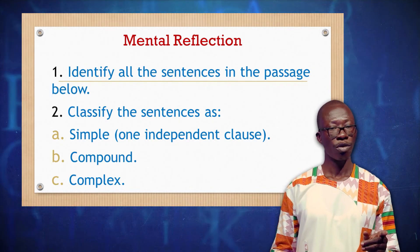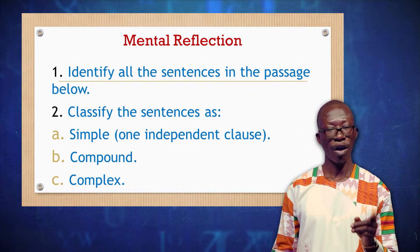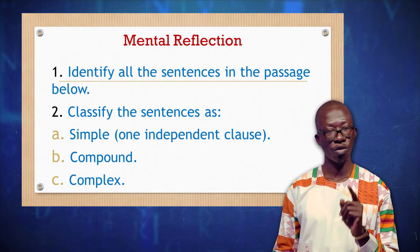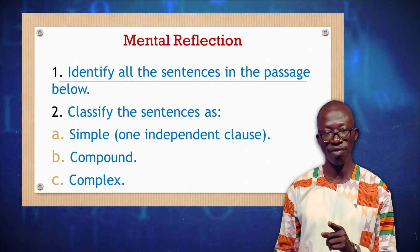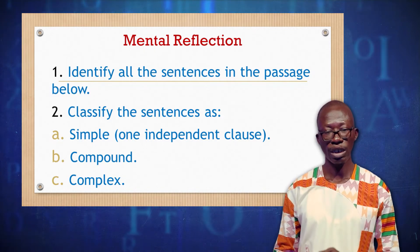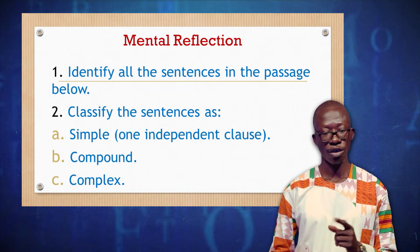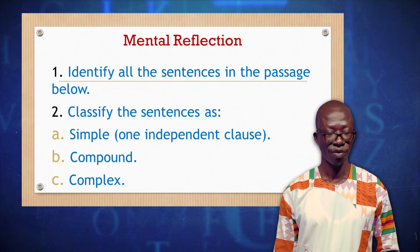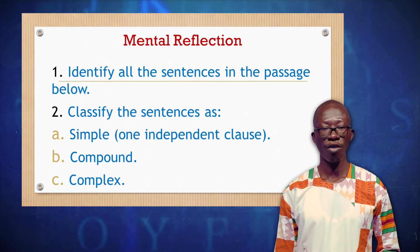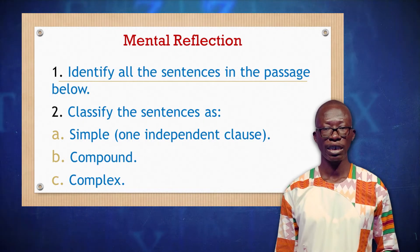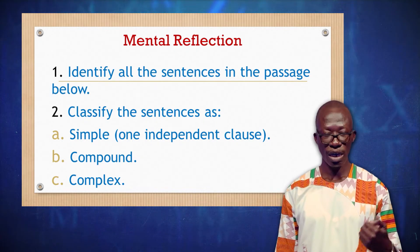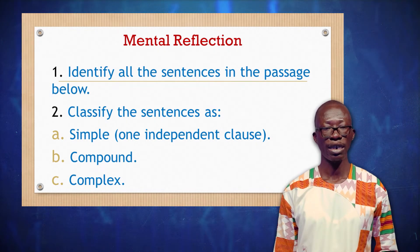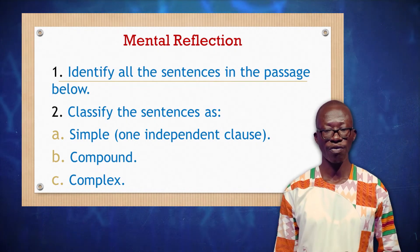We should be able to identify all the sentences in the passage. After that, we should classify the sentences we've identified as to whether each is a simple sentence, a compound sentence, or a complex sentence. Now let's go into the passage. First of all, we shall read the entire passage, then we go back to begin to identify the sentences and classify them as well. You read with me?